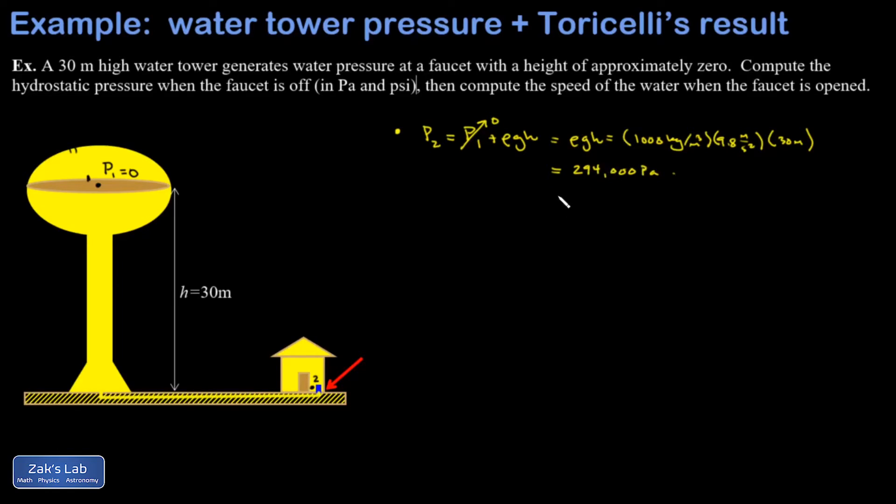Another conversion you may need to be reminded of is that there are 6,895 pascals in a psi or a pound per square inch. When I apply that conversion, I get 42.6 psi. And this is actually a very realistic residential water pressure.